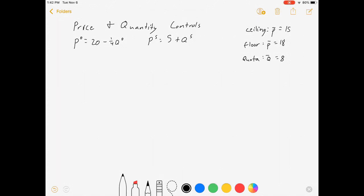Hi everybody, welcome to my video on price and quantity controls in a competitive market. I'm going to start this problem out giving you an inverse demand curve, price equals 20 minus 1/4 QB, and an inverse supply curve, price equals 5 plus QS.